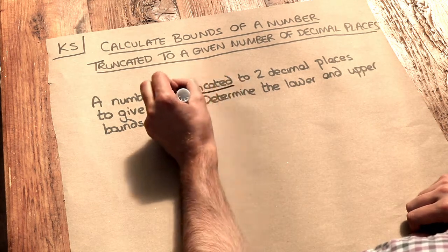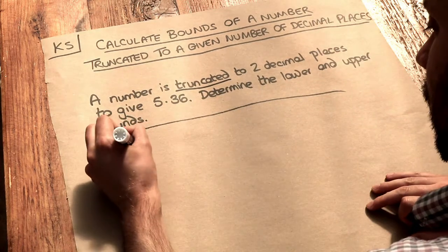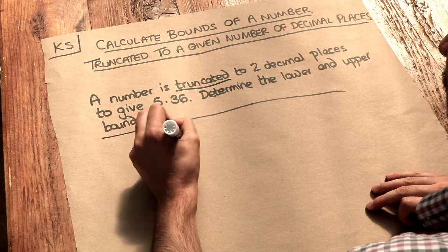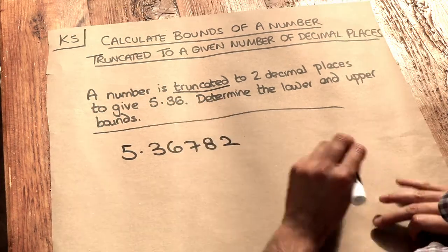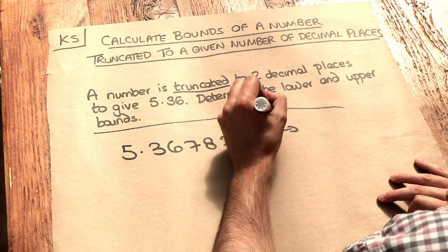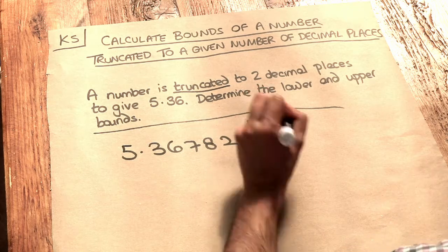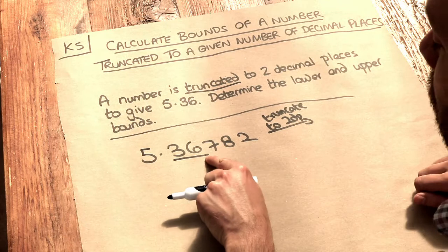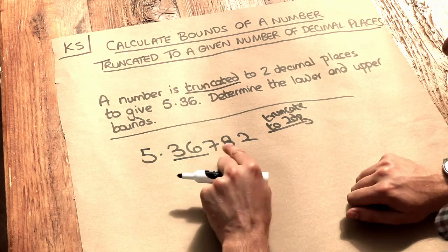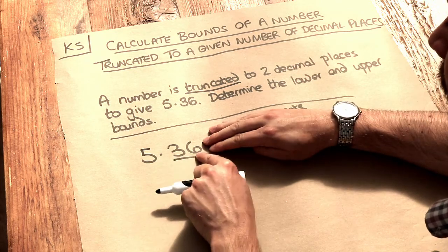Now let's remind ourselves what the word truncated means. So for example, if I had 5.36782 and I was to truncate that to two decimal places, what that means is we look at the first two digits after the decimal place. And now if we're rounding to two decimal places, we check the digit after. Is that five or above? Yes it is, so that would become 5.37.